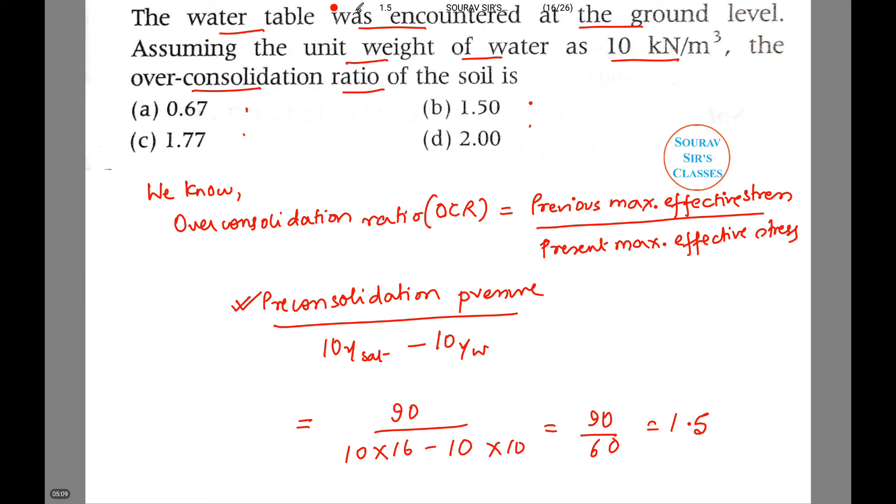So if you look at these options, then you can clearly say that B is the correct option, which is 1.5. We have also got a value of 1.5, so the over-consolidation ratio of the soil is 1.5.